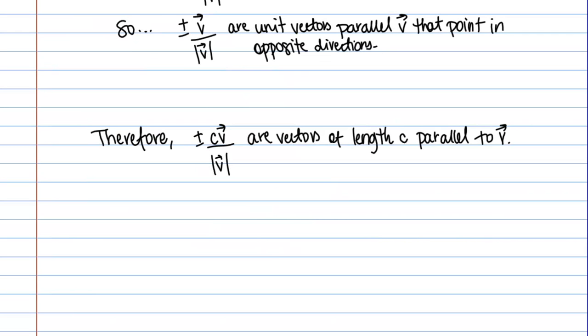If we take this just one step farther, so if plus or minus v over magnitude of v are unit vectors parallel to vector v, remember unit vector has length 1, if instead we want a vector of length c, plus or minus c vector v over magnitude of v are vectors of length c parallel to v, because it's the same vector as this, just multiplied by a scalar of c.